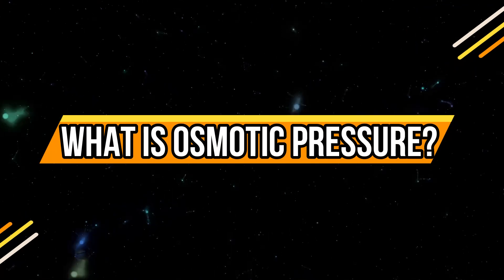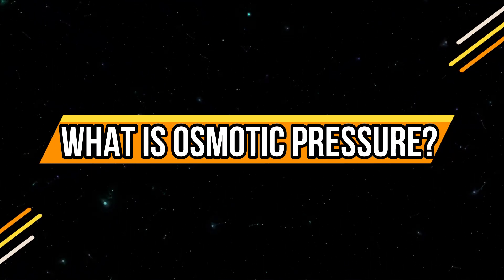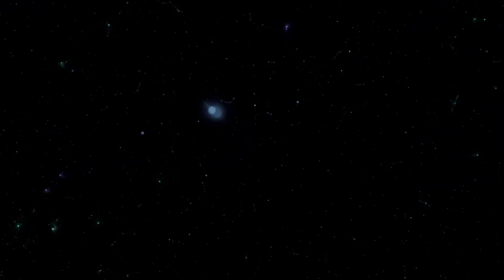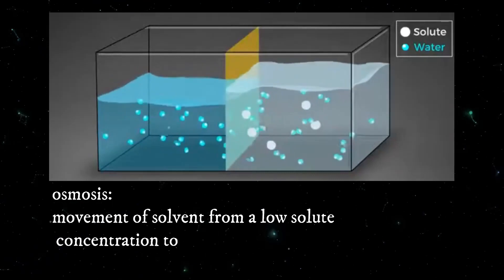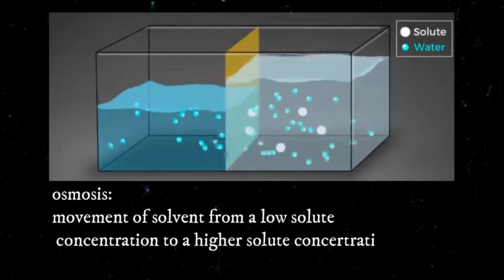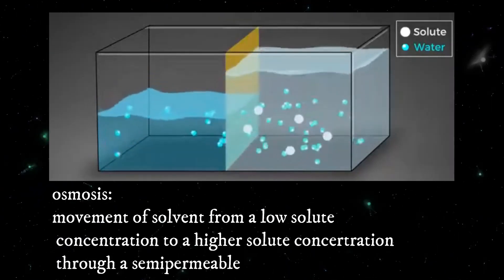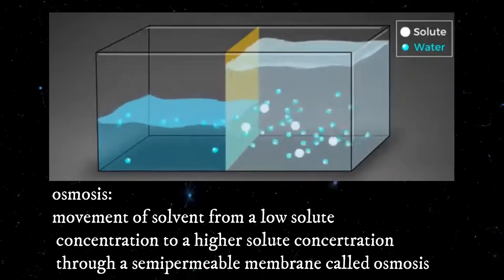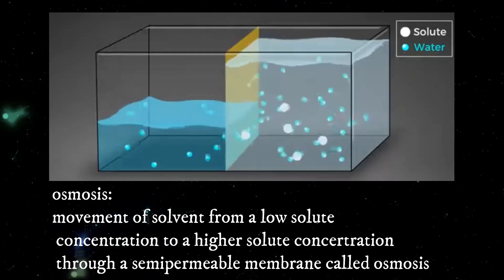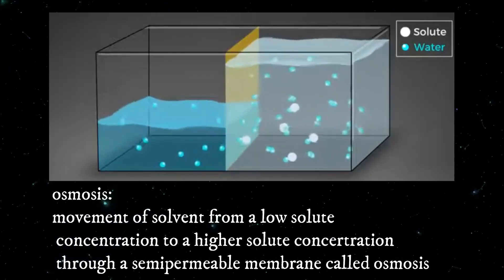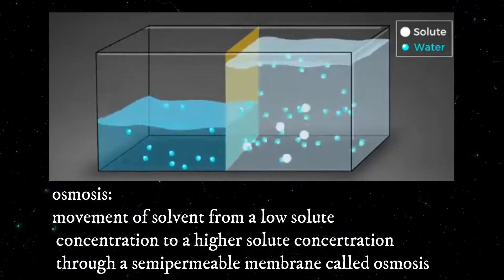What is osmotic pressure? First, osmosis: the movement of solvent from a low solute concentration to a higher solute concentration through a semipermeable membrane is called osmosis.